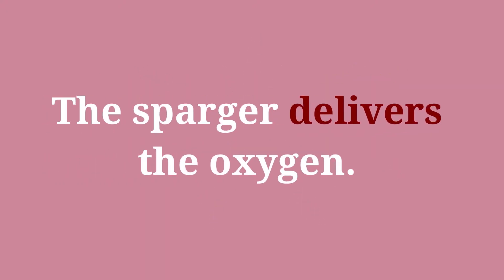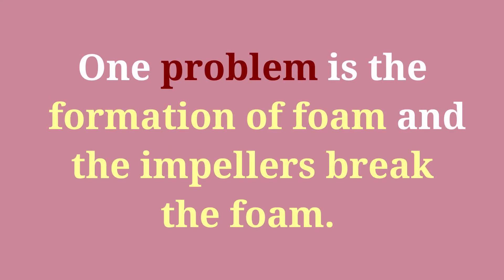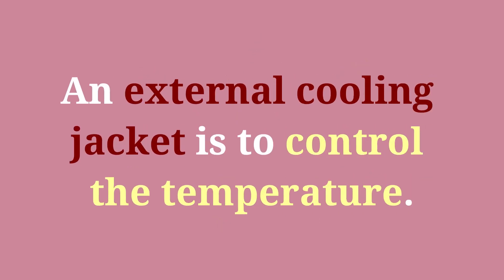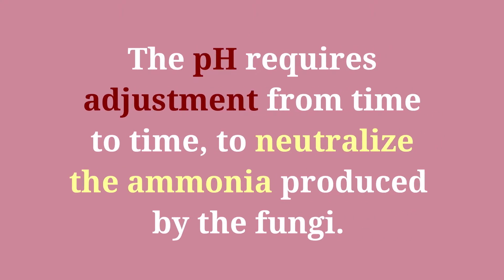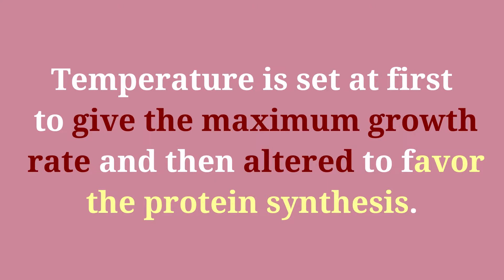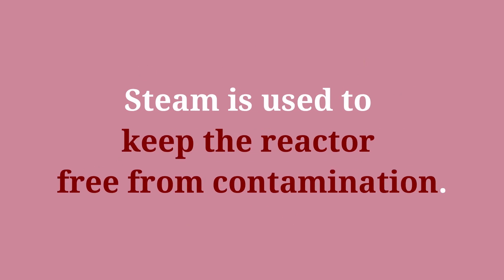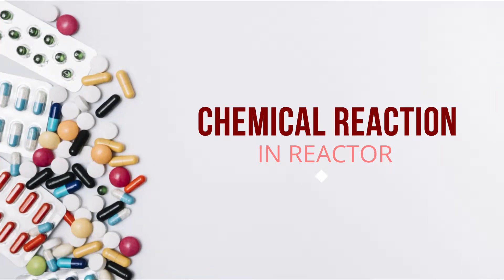Oxygen is a vital component for aerobic metabolism. The sparger delivers the oxygen. One problem is the formation of foam, and the impellers break the foam. An external cooling jacket is there to control the temperature. The pH requires adjustment to neutralize the ammonia produced by the fungi. Temperature is set initially to give the maximum growth rate and then altered to favor protein synthesis. Steam is used to keep the reactor free from contamination.